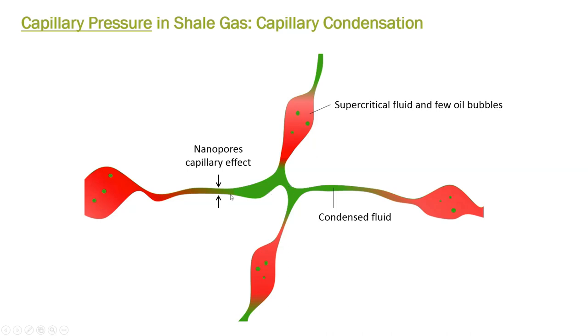At pressure close to the dew point, because of the capillary pressure, we have a liquid here. So the fluid condenses here. But in these larger pores, because we should neglect the capillary pressure effects, the fluid is supercritical and we may have some liquid droplets inside the system. We have to consider this type of capillary pressure effects into our modeling.